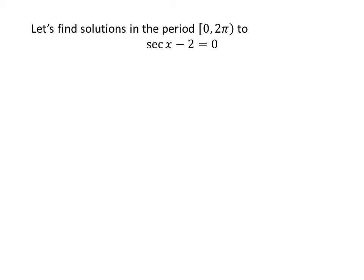Now let us find the solutions to the equation secant of x minus 2 is equal to 0 in the period of 0 to 2 times pi, as the secant function is a periodic function with a period of 2 times pi. Taking minus 2 to the right hand side gives us secant of x is equal to 2. We know the value of secant of pi upon 3 is 2.